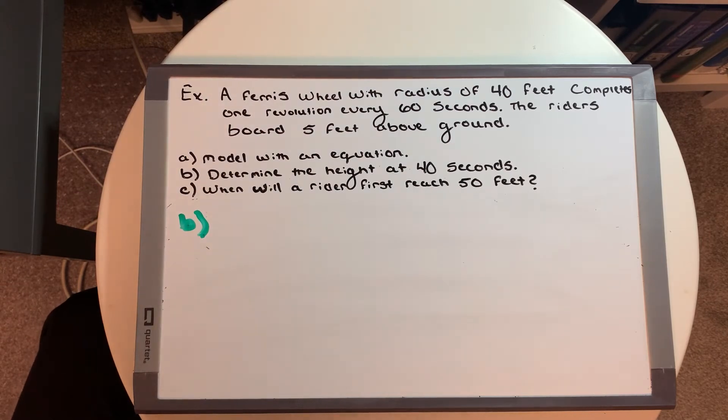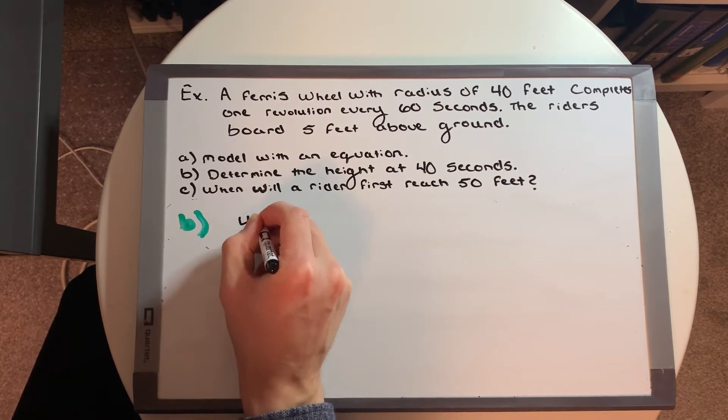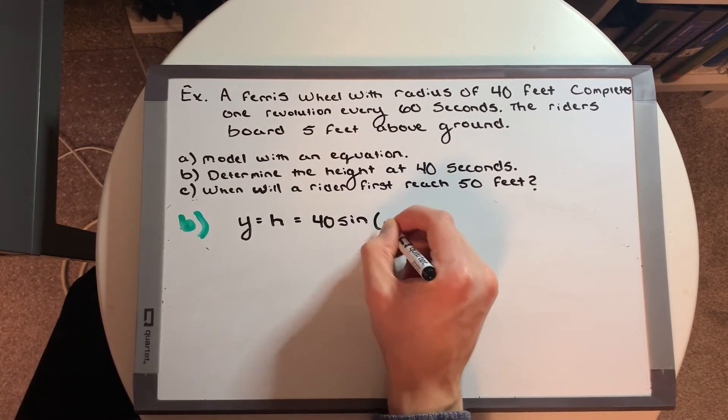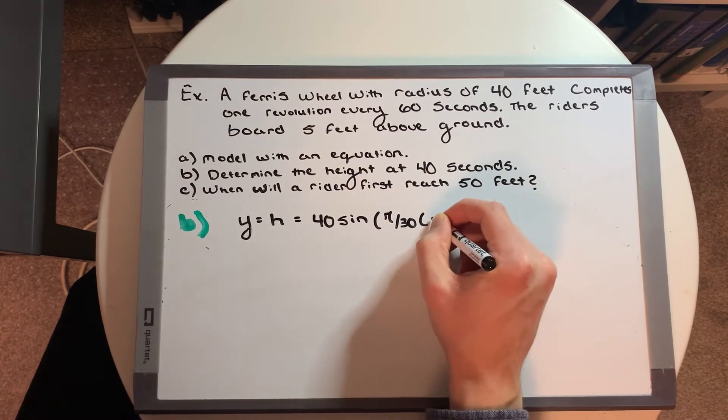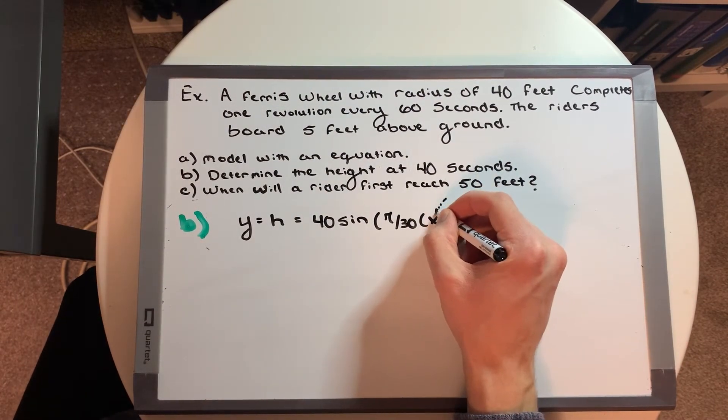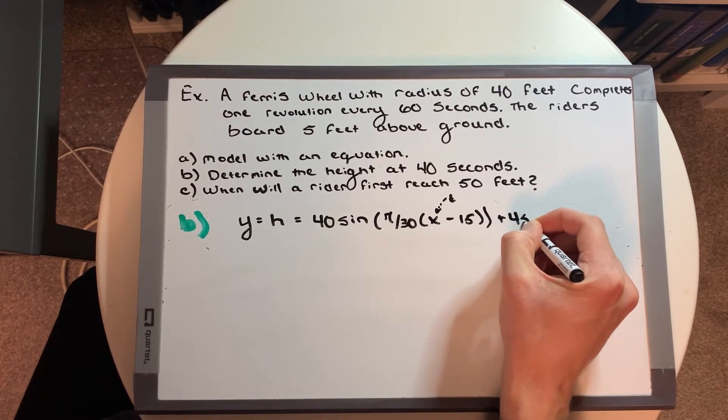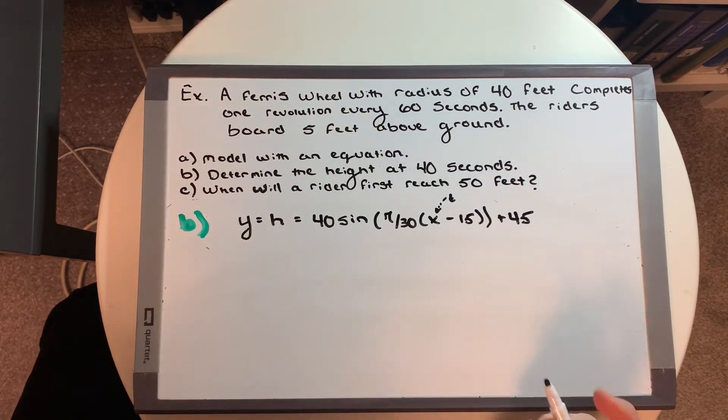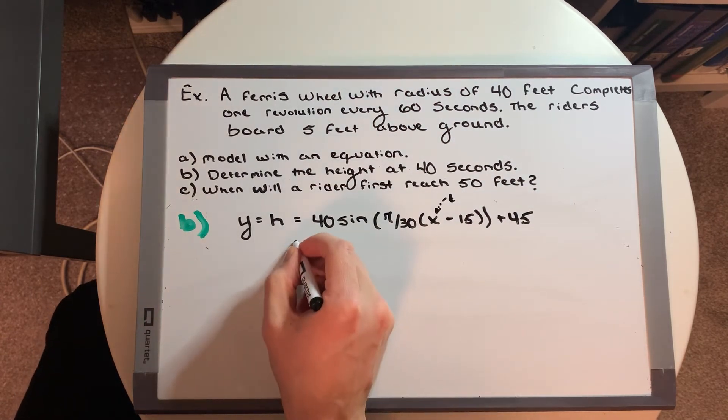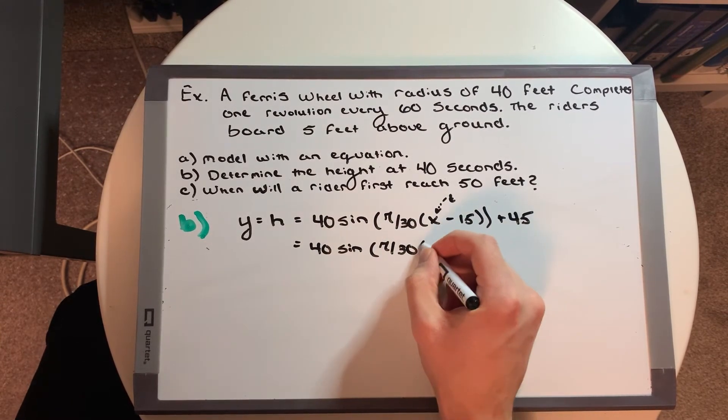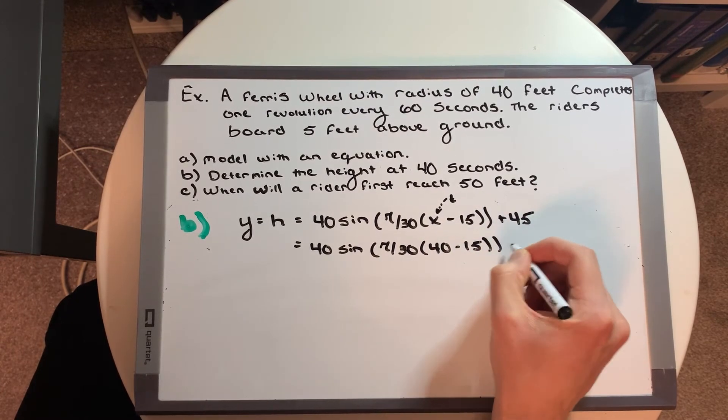So when we were looking at our graph, we would say that we're going to look along the x-axis, and where 40 is, we want to find that height. But we can literally just model this through our equation, because we said if y, which is also equal to the height, is equal to 40 sine pi over 30, bracket x, and x is also equal to time, but I'm just going to write it above instead, minus the 15, plus 45. If we want to find the height at 40 seconds, what are we doing? Well, we're just technically subbing in 40 for x. So our equation would become 40 sine pi over 30, 40 minus 15, plus 45.